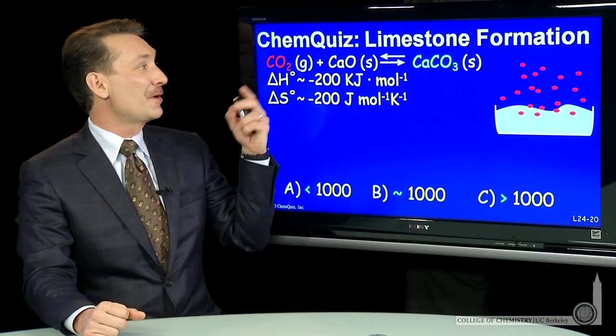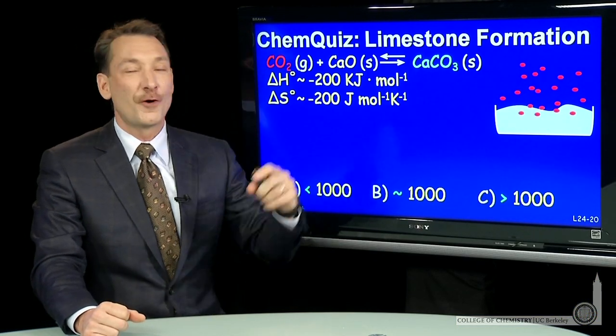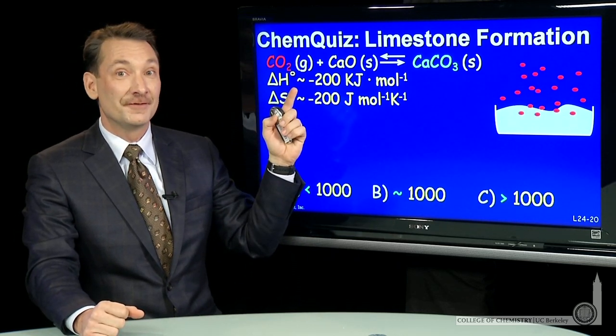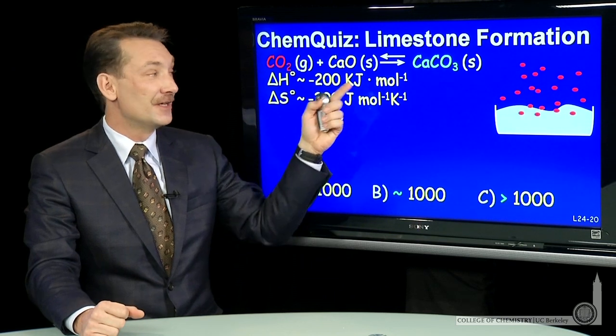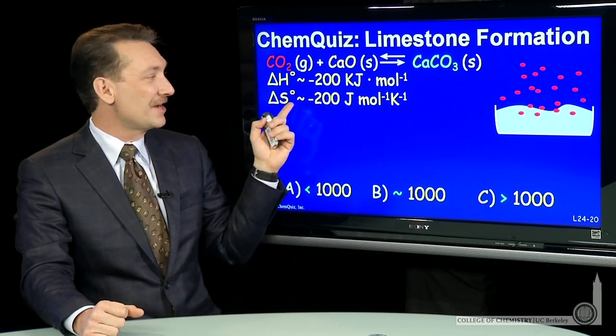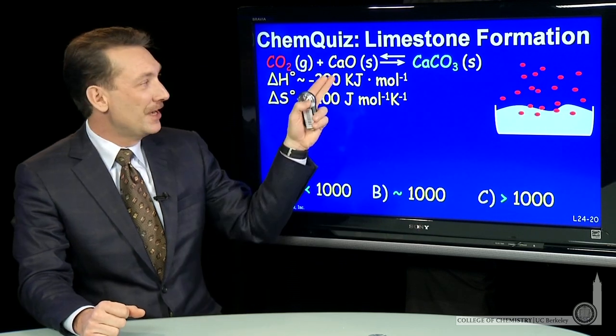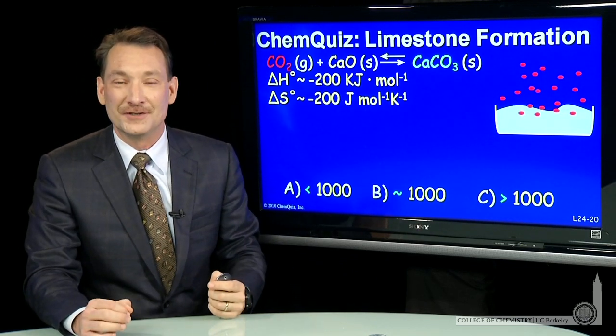We're looking at carbon dioxide and calcium oxide forming calcium carbonate. Now, the standard enthalpy difference for that chemical reaction is minus 200 kilojoules per mole. The standard entropy, minus 200 joules per Kelvin mole. So kilojoules and joules, a factor of 1,000 between the two.